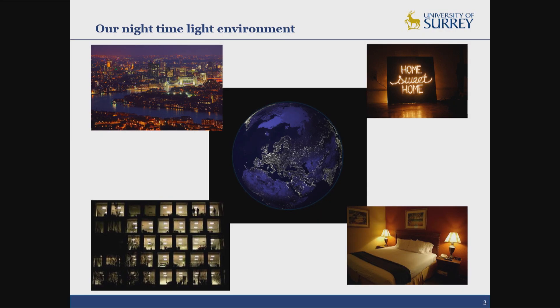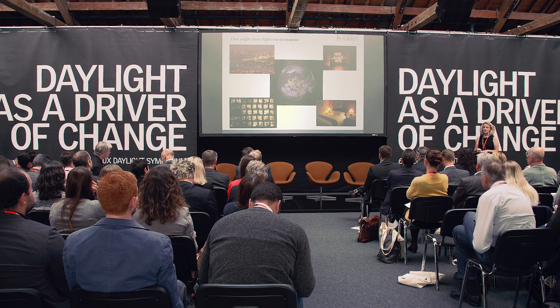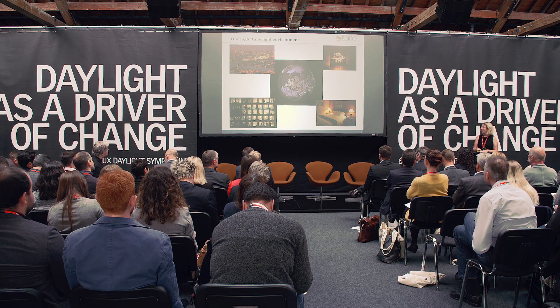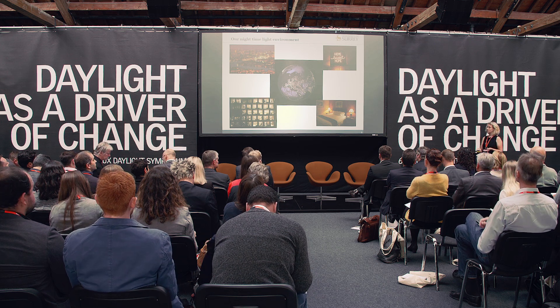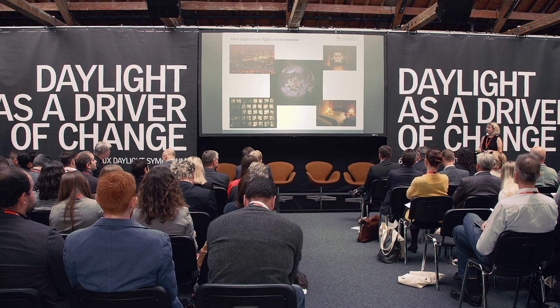We are now a 24-7 society, so not only do we have to consider our daytime light exposure, but we now have to think about the light that we're exposed to at night. Looking at Europe by night, you can see how well lit up we are — not only because we tend to socialise late into the evening, but we now often work overnight, and also we need to think about our light environment in our own home.